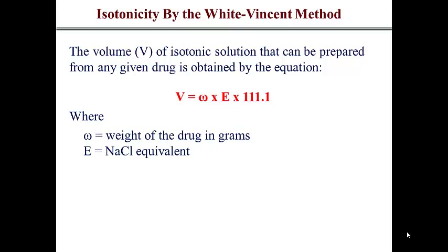You might wonder how this equation gives you units of volume. Your weight is in grams, and your E, the sodium chloride equivalent, is dimensionless — it has no units. The factor 111.1 is actually the inverse of 0.9% sodium chloride solution, which is isotonic by nature. That means you have 100 milliliters divided by 0.9 grams, so the grams cancel out, leaving you with units of milliliters.